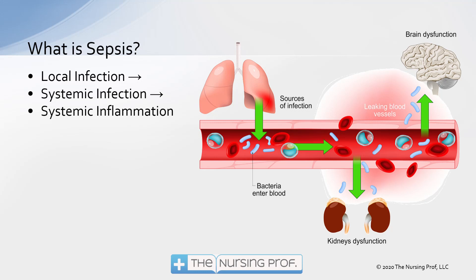Sepsis causes an out-of-control inflammatory response to occur. First we need to have a local infection — the infection starts somewhere and then gets into the bloodstream, becoming a systemic infection. In this diagram, on the left-hand side you have the lungs, and the patient has developed a local infection in the lungs — some pneumonia. Bacteria then gets into the bloodstream.